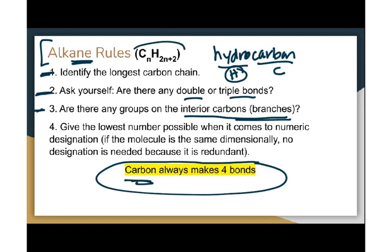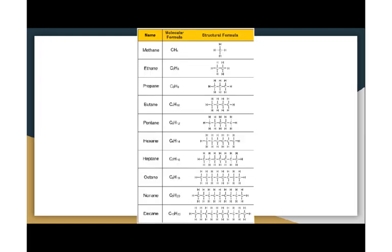This is the formula for alkanes. If I told you you had six carbons, you would say C6, and then H. Using this formula, 2 times 6 is 12, plus 2 is 14. So that is an alkane. Now, if it's an alkene or an alkyne, this formula changes. But for an alkane, that formula works.